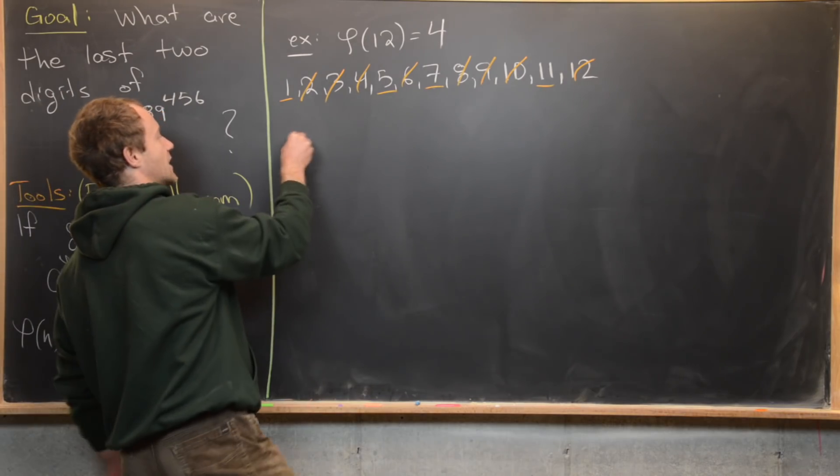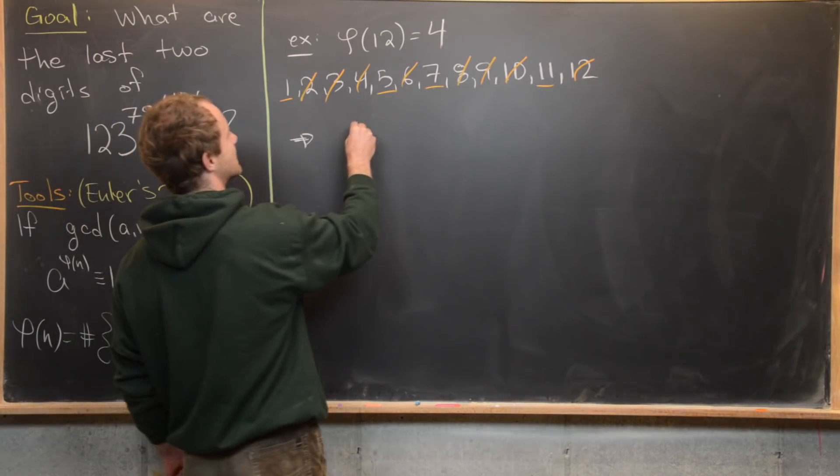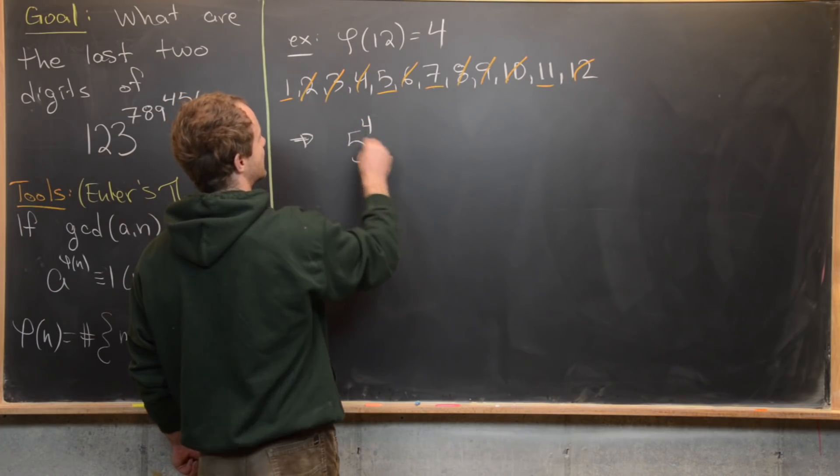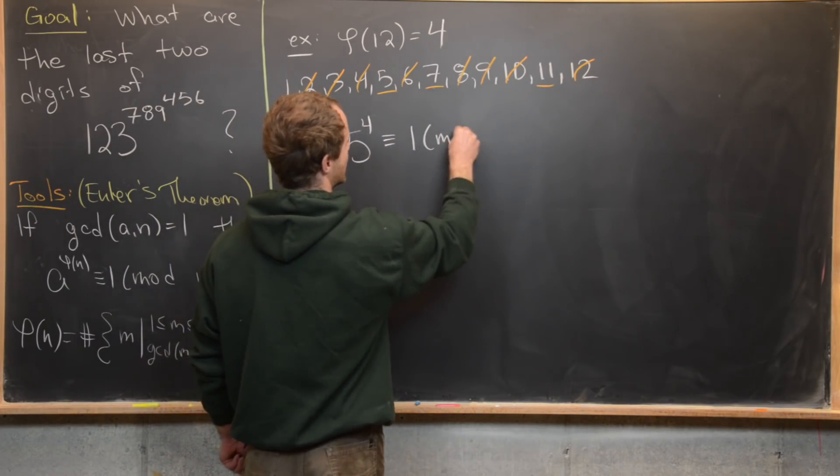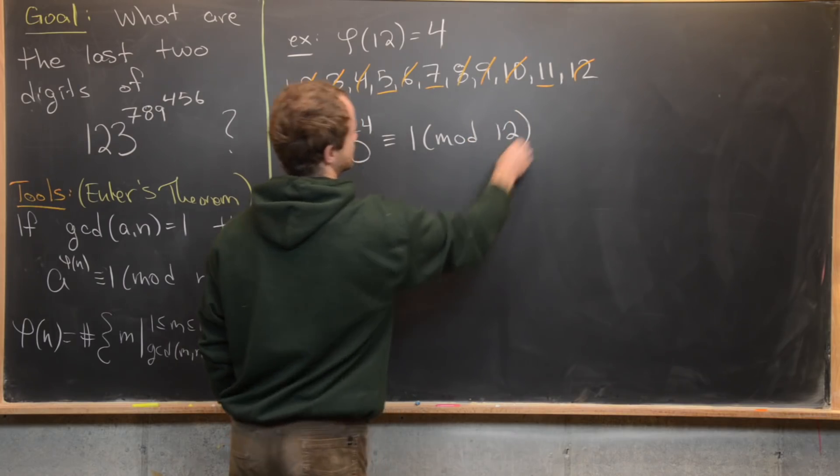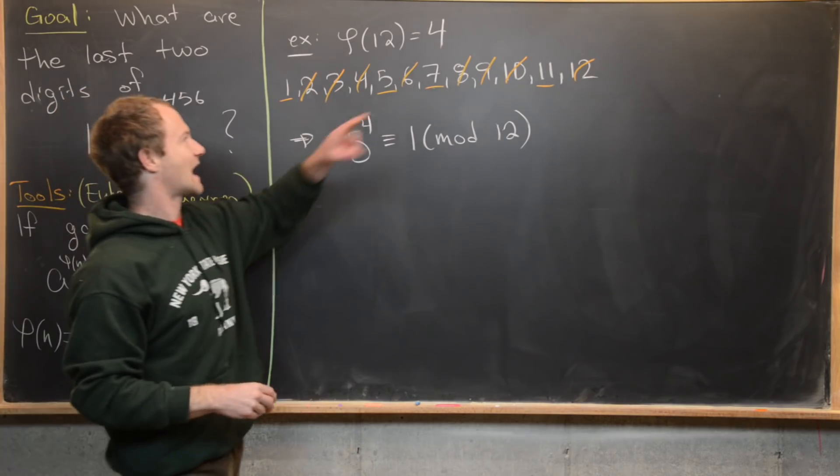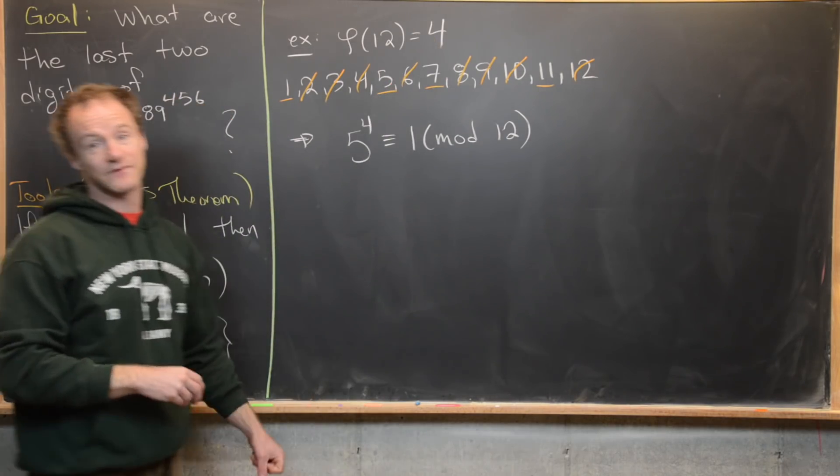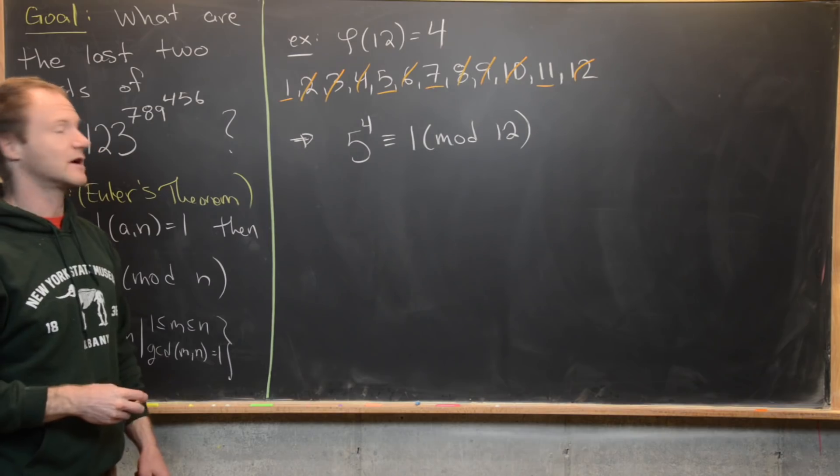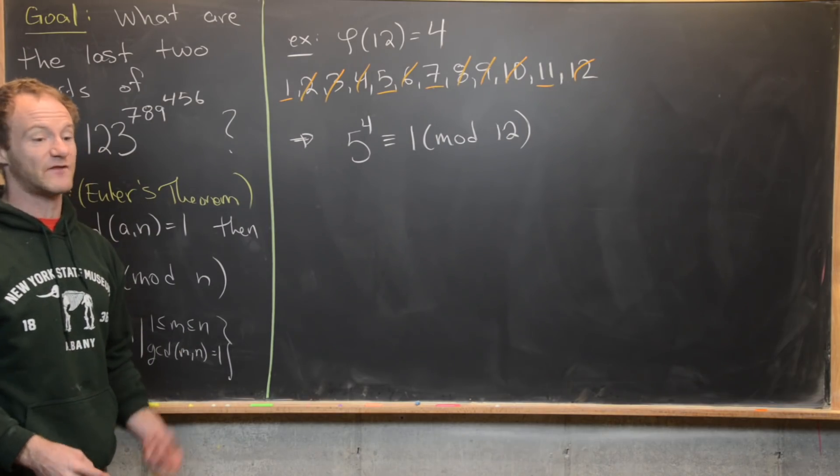Now applying Euler's theorem, we can see immediately that if we took 5 to the fourth power, that must be congruent to 1 mod 12. And we can actually check this. In fact, we don't always have to go up to this maximum number here. Sometimes we go up to a factor of that.